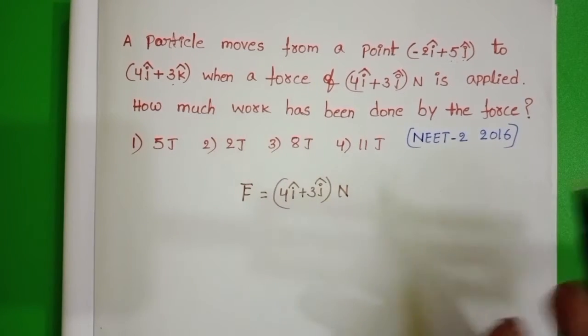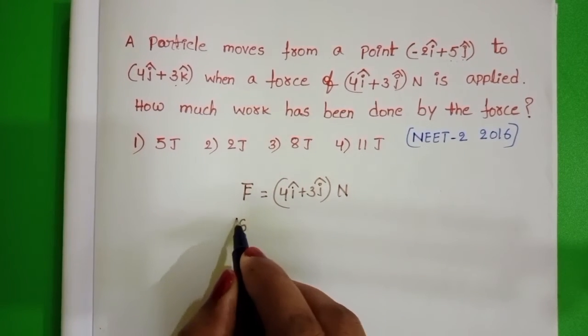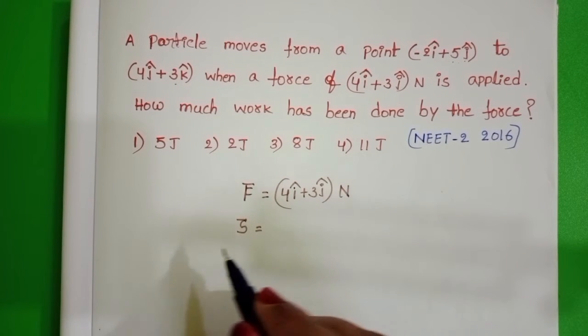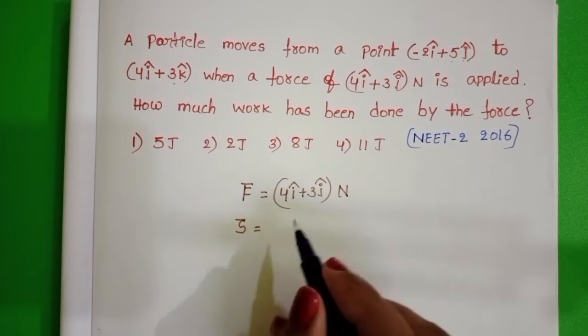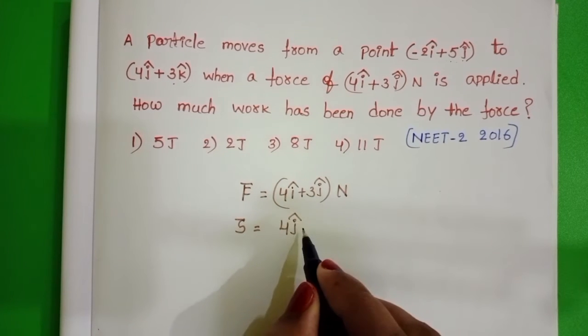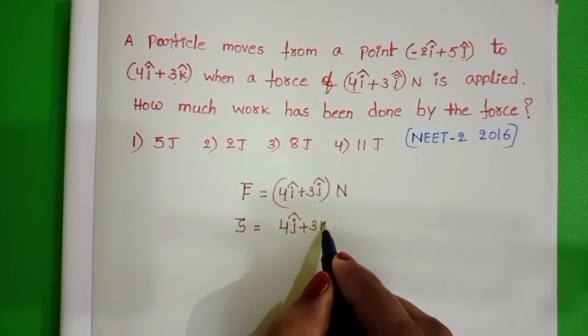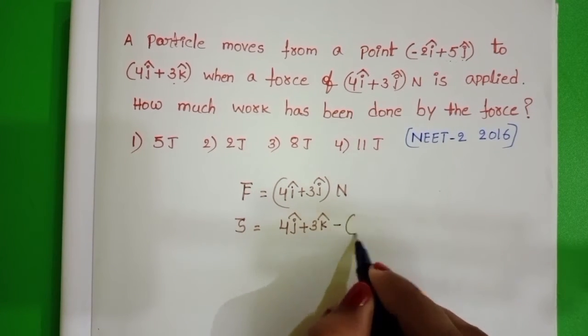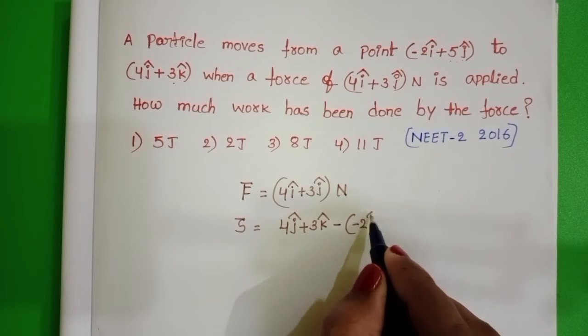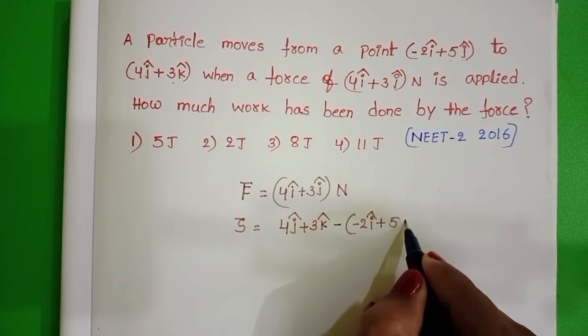So displacement or position vector S⃗ = final position minus initial position. Final position 4ĵ + 3k̂ minus initial position -2î + 5ĵ.